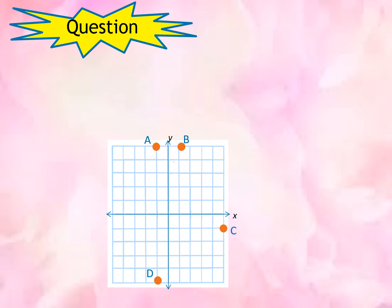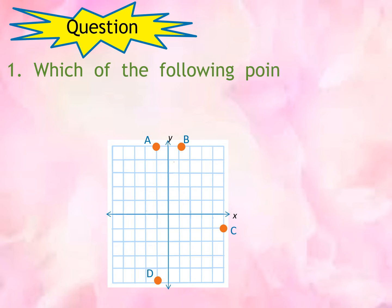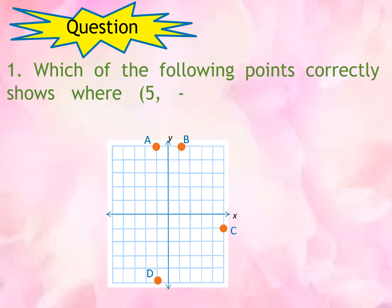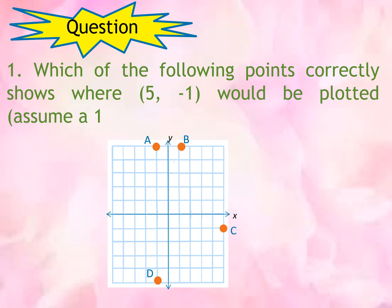So here's a question for you. Which of the following points correctly shows where (5, negative 1) would be plotted, assuming that those squares have one scale unit?